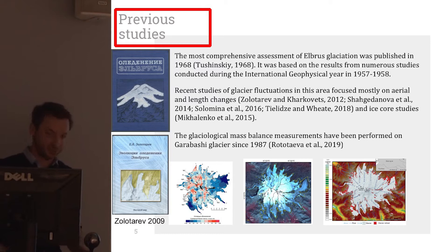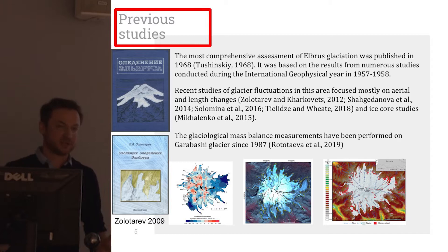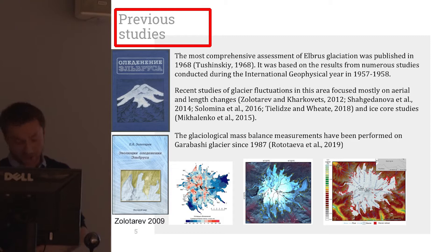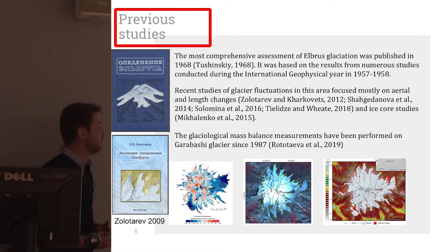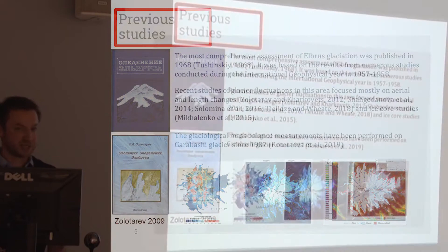There was a large effort during the International Geophysical Year in the 1950s, and there was a book published. Most of the subsequent studies were dedicated to assessment of spatial changes — how the area or glacial length changed. There was fundamental work back in 2009 by Moscow State University combining all efforts, assessing mass changes from 1957 to 1997. Since then, there has been no information about how mass changes.